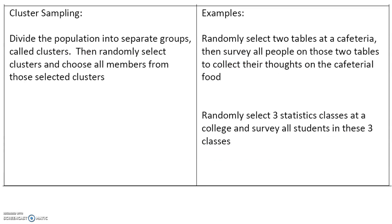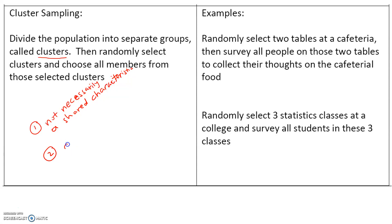On the other hand, cluster sampling divides a population into separate groups called clusters. We then randomly select a cluster and choose all members from that selected cluster. Note two key differences: one, a cluster does not necessarily have a shared characteristic; and two, we select all members of a selected cluster for the sample.